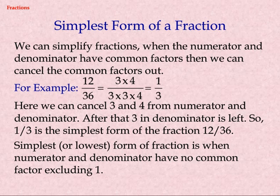Simplest form of a fraction. We can simplify fractions. When the numerator and denominator have common factors, we can cancel the common factors out. For example, twelve by thirty-six equals three times four divided by three times three times four, which equals one by three. Here we can cancel three and four from numerator and denominator, leaving three in the denominator. So, one by three is the simplest form of twelve by thirty-six. The simplest, or lowest, form of a fraction is when the numerator and denominator have no common factor excluding one.